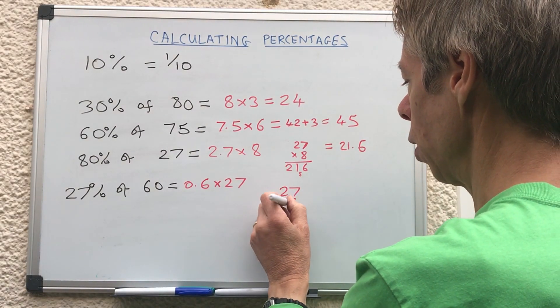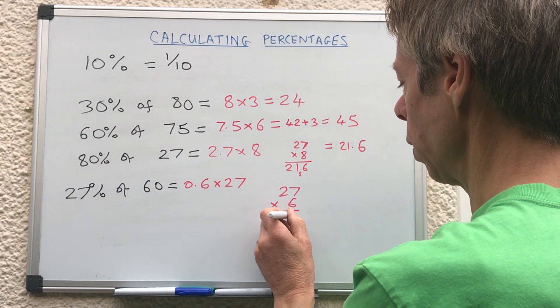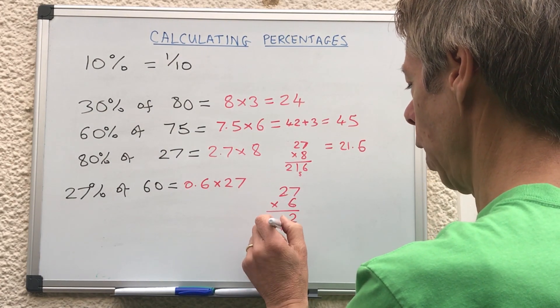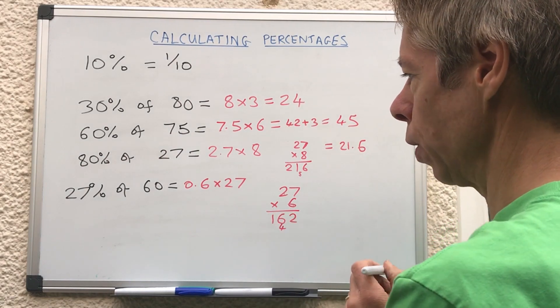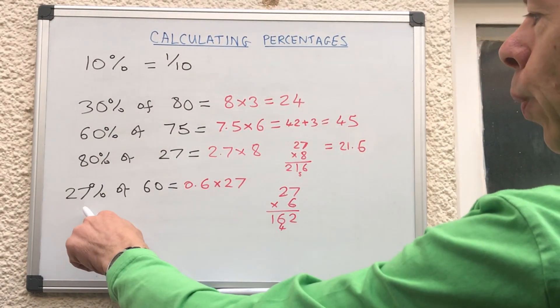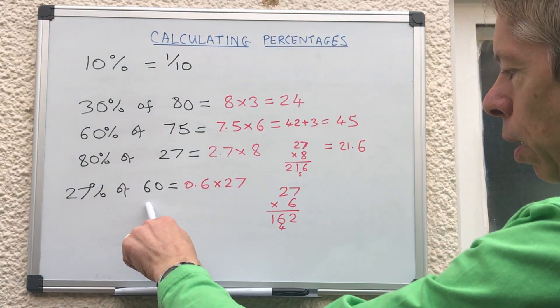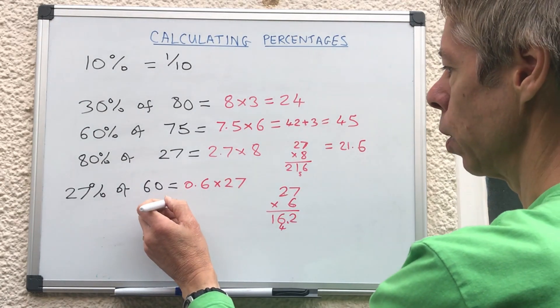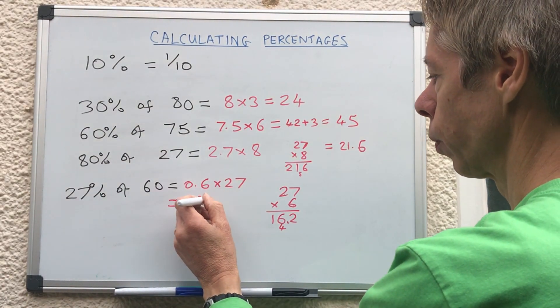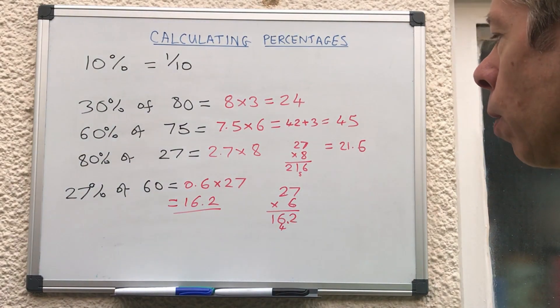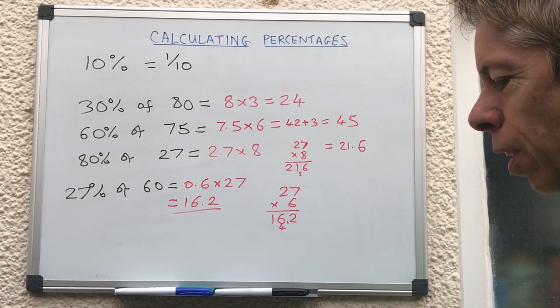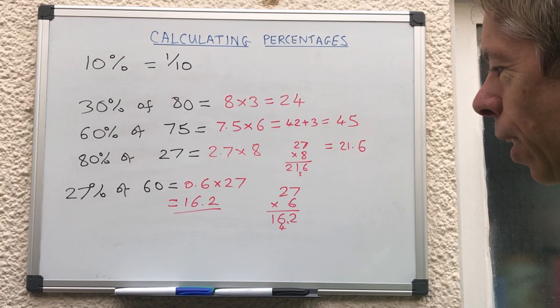So all we do now is 27 times by 6. 6 times 7 is 42, 6 times 2 is 12 plus 4 is 16, so we've got 162. We're doing 27 percent of 60 which is roughly a quarter, so a quarter of 60 must be 16.2.